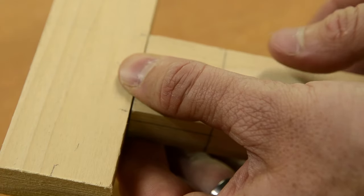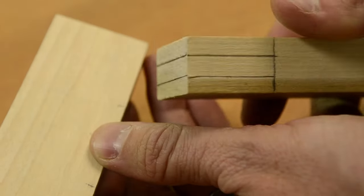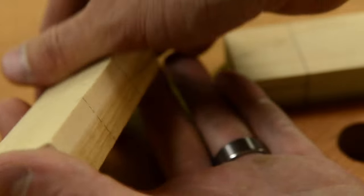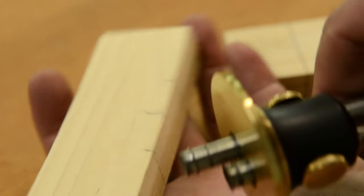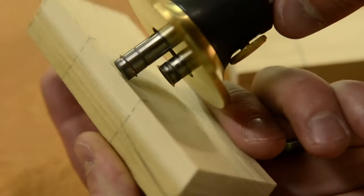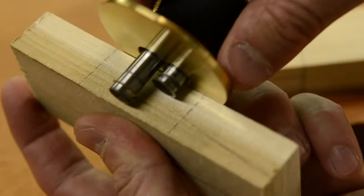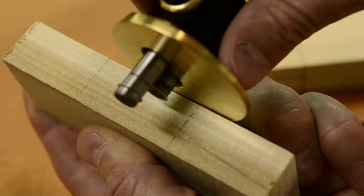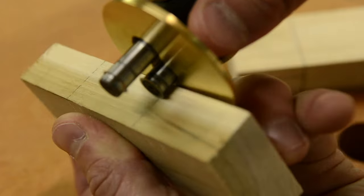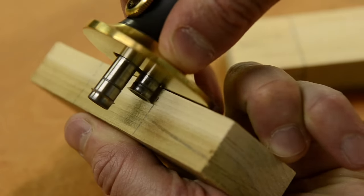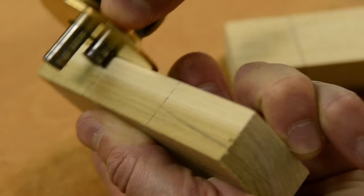This is how the tenon will look up against the mortise. Now you'll notice that I scribed some lines of where the tenon will go into the mortise. Now keeping the same settings on your marking gauge, go ahead and scribe the same markings in between the little lines there where your tenon will go.